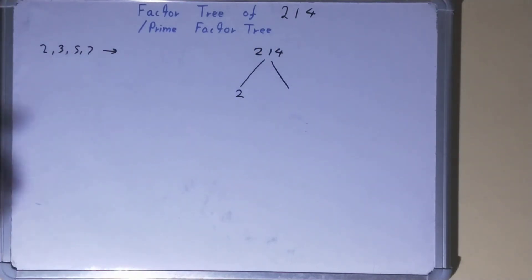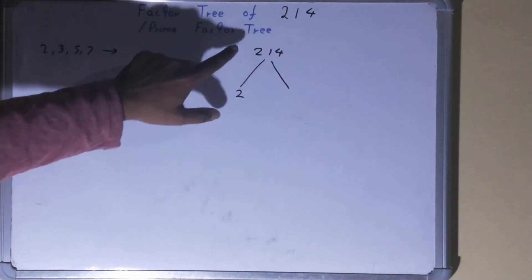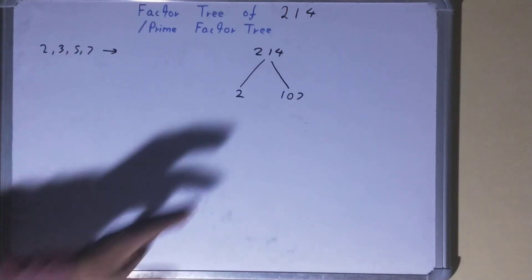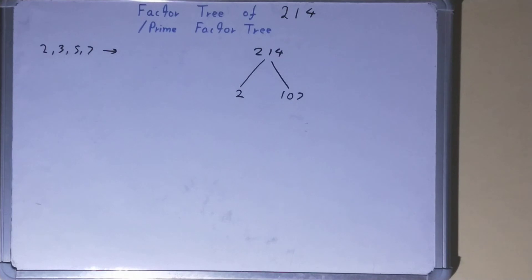will be 2. The other will be whatever we get after dividing. So 214 divided by 2, what we get - we get 107. So 107 will be the other number. Now do we need to factorize this 107 further on?